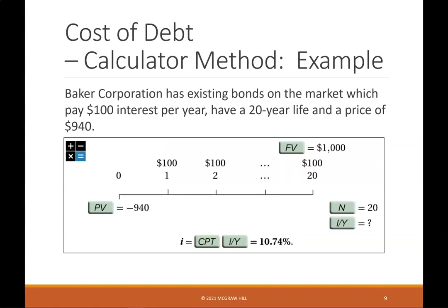Cost of debt — calculator method example: Baker Corporation has existing bonds on the market which pay $100 interest per year, have a 20-year life, and a price of $940. In the financial calculator: PV is negative 940, FV is 1000, N is 20. We solve for I/Y to get a yield of 10.74%.